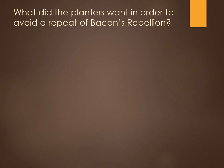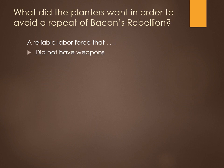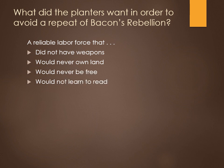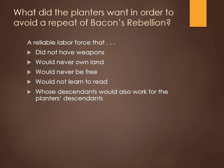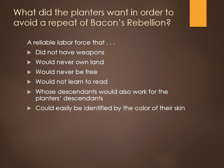What did they want in order to avoid a repeat of Bacon's Rebellion? They needed workers — a labor force. That was the source of their wealth. Tobacco was very labor intensive. But they wanted a labor force that did not have weapons, that would never own land, that would never be free, that would not learn to read so they couldn't communicate, and whose descendants would also work for the planters' descendants on and on and on. And ideally, a workforce that could easily be identified by the color of their skin. The perfect solution was African slaves.